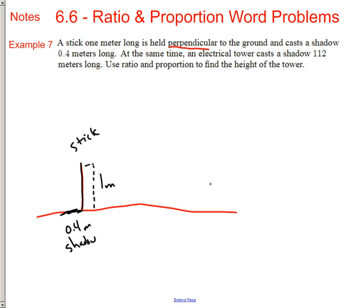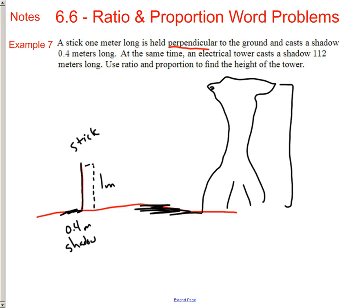Let's say the shadow is off to the left, and it says it's 0.4 meters long. So here's the shadow, this is the stick, and it's standing there like that. And then it says at the same time an electrical tower, so here's this huge tower, and it's got all of these weird legs, and all the power lines are running into it. The shadow is actually going to be 112 meters long.